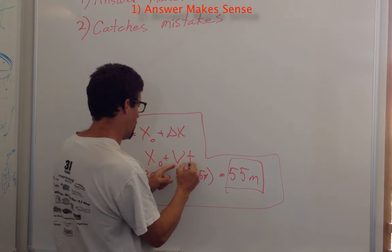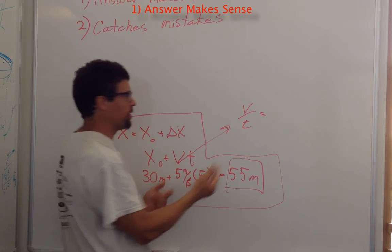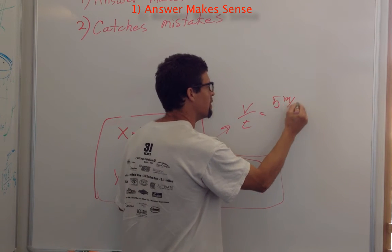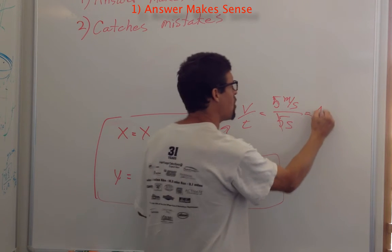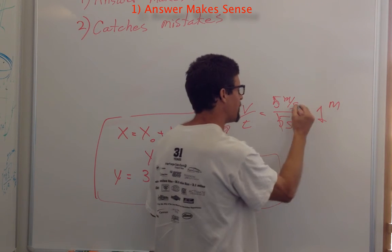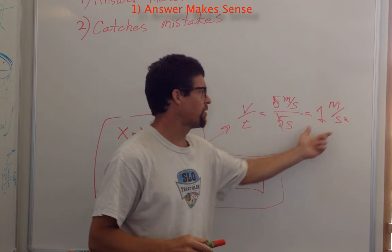What if you had, you accidentally wrote V over T, and then you find out your answer was, you say, it's one. It's one meter per second squared. And you're like, oh wait, wait, wait, no, that's an acceleration?